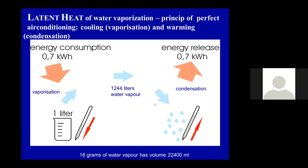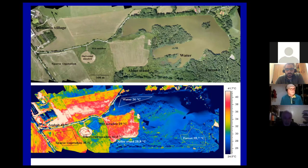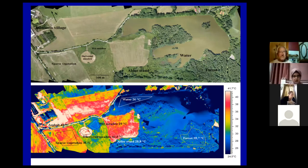In the morning there is dew, and the water vapor condensates back into water droplets and energy is released. This is a buffering of the temperature differences between day and night, and it is a main cooling system.